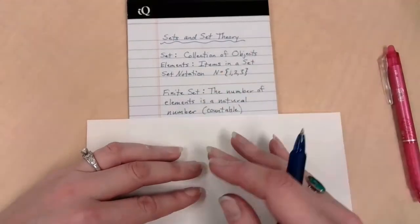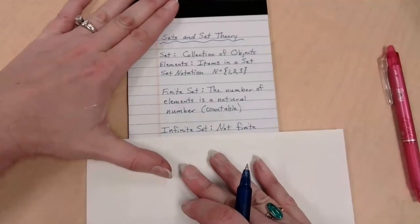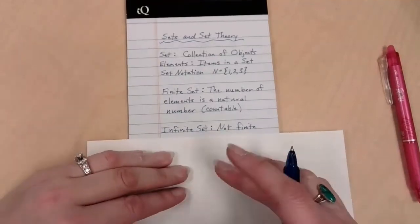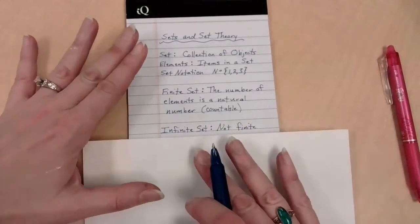So what does that mean for contrast? Well, if it's not finite, then it's infinite. Literally, that's often our definition. It's just that it's not finite. So in other words, it's going to be not countable.